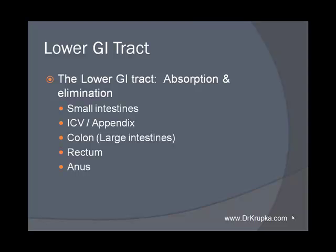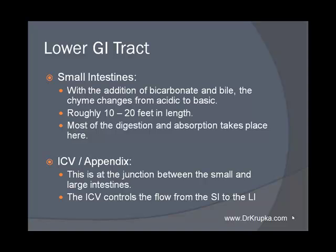Lower gastrointestinal tract — the lower GI tract — is mostly responsible for absorption and elimination. This consists of the small intestines, the ileocecal valve and appendix, the colon (also known as the large intestines), the rectum, and the anus. In the small intestines, with the addition of bicarbonate and bile, the chyme changes from being acidic to basic or alkaline. You have roughly 10 to 20 feet of small intestines, and most of the digestion and absorption takes place here — this is where the brunt of it happens.